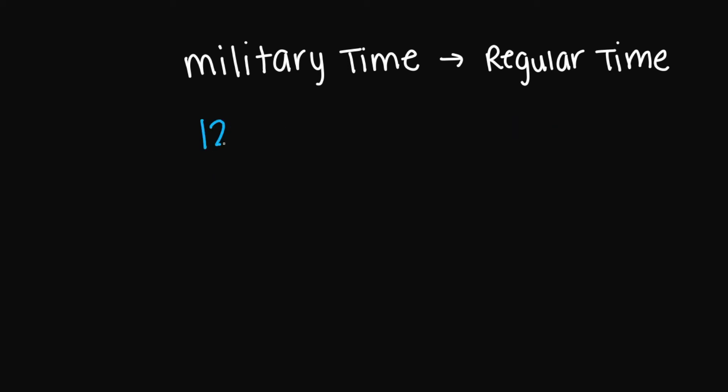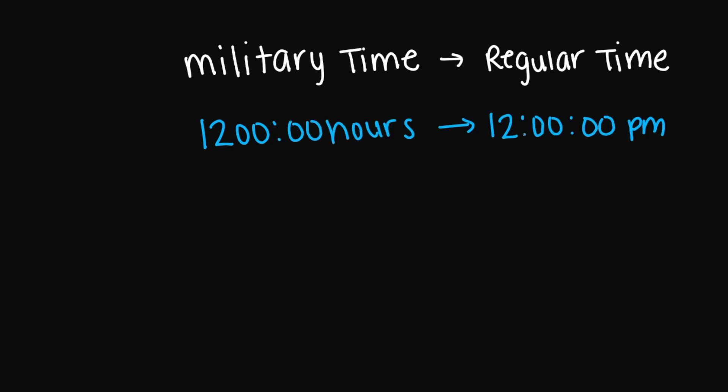If it's p.m., that means you have to add or subtract 12. So let's say we had 1200 hours for military time. To convert to regular time, this is going to be 12 o'clock p.m.